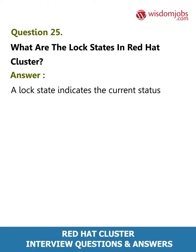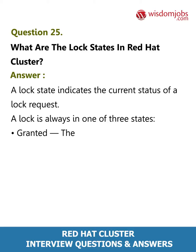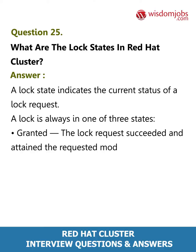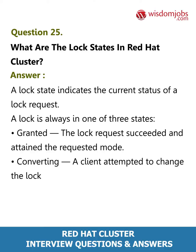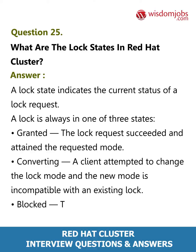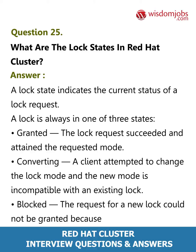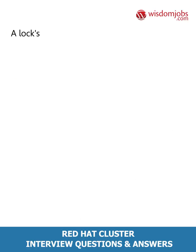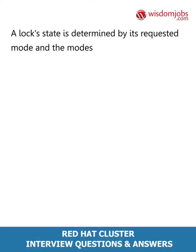Question 25: What are the lock states in Red Hat Cluster? Answer: A lock state indicates the current status of a lock request. A lock is always in one of three states: Granted — the lock request succeeded and attained the requested mode; Converting — a client attempted to change the lock mode and the new mode is incompatible with an existing lock; Blocked — the request for a new lock could not be granted because conflicting locks exist. A lock state is determined by its requested mode and the modes of other locks on the same resource.